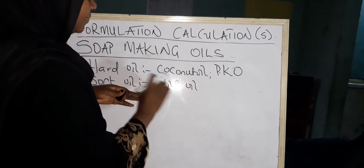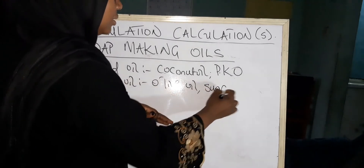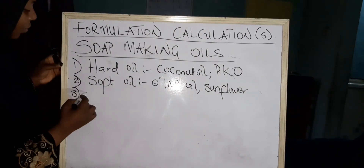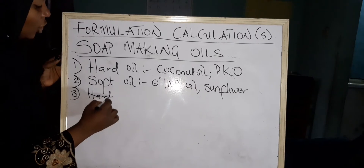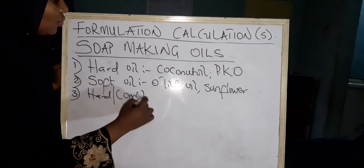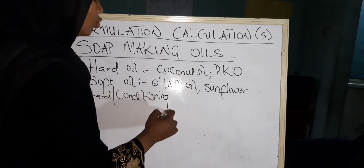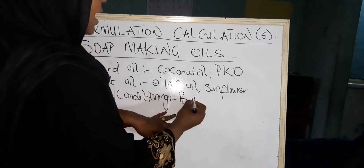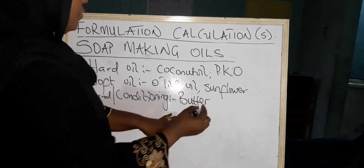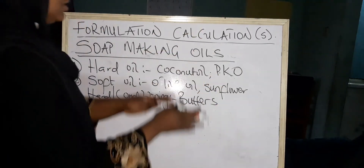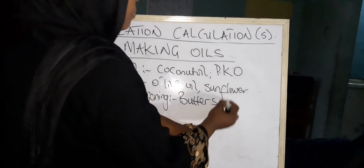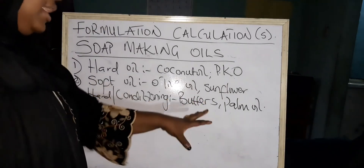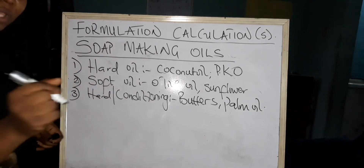Then we have soft oils — olive oil and sunflower oil are examples. The third category is hard conditioning oils. These add lather to your soap and also help to soften the skin. Most hard conditioning oils fall in the category of butters — mango butter, shea butter, avocado butter — and even palm oil, our popular cooking palm oil, is also an amazing oil for soap making.